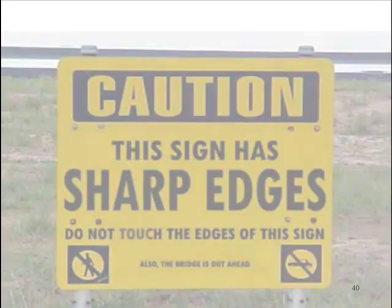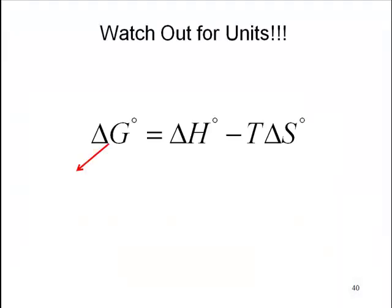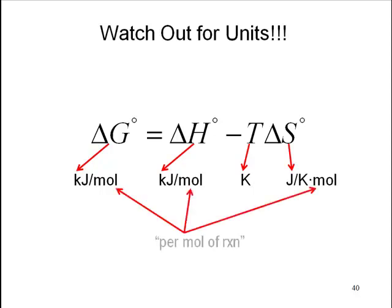Two things about this equation though. Watch out for the units. Delta G sub-naught, kilojoule per mole, kilojoule per mole kelvin, and joules per kelvin per mole. This is all per mole of reaction.